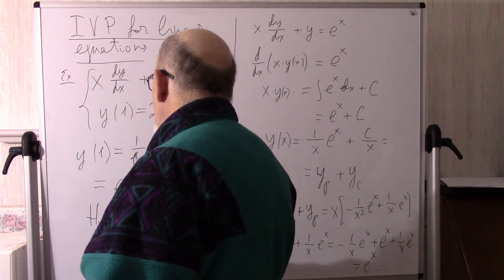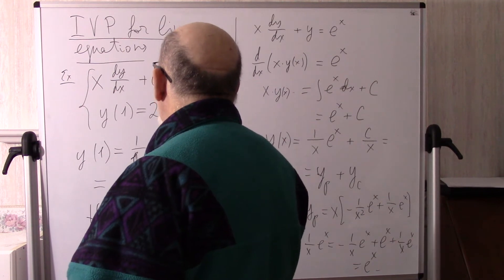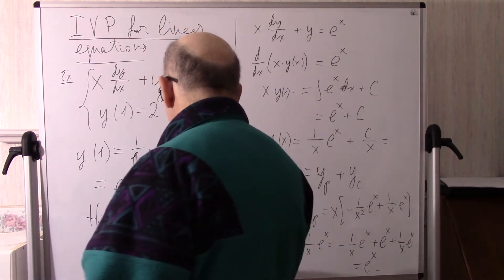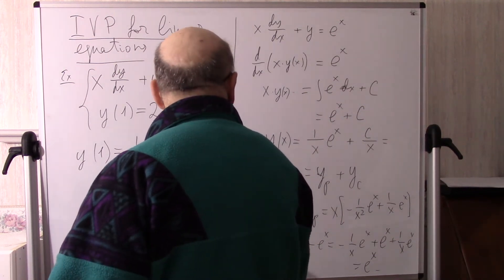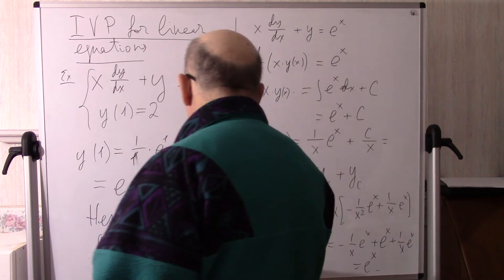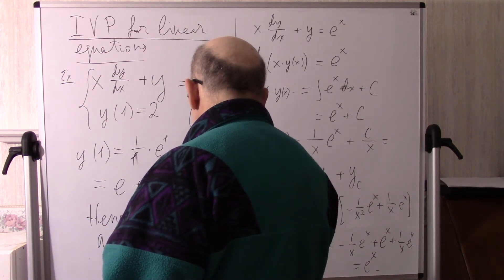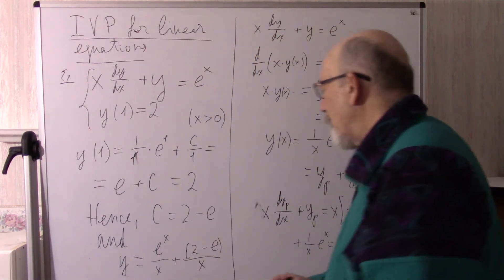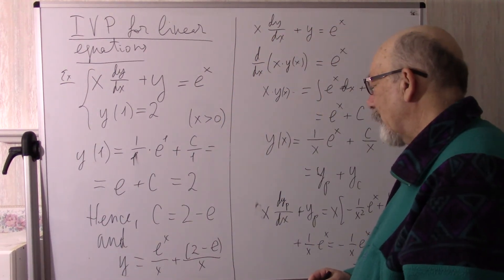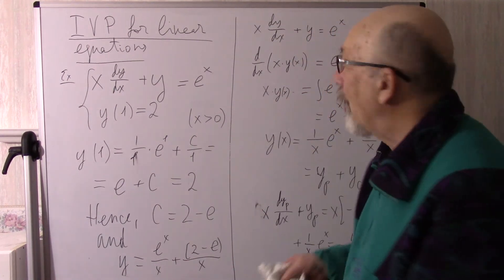So y equals e^x divided by x plus (2 minus e) divided by x. Everything is found — this is the solution of this initial value problem.